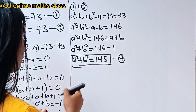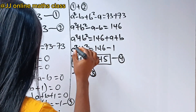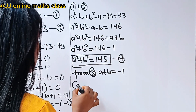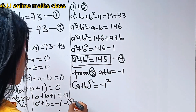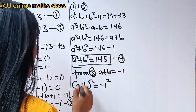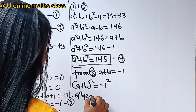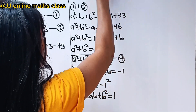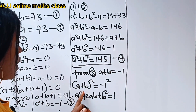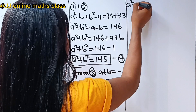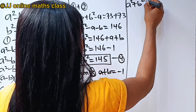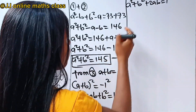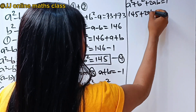From equation 3, a plus b equals minus 1. If we square both sides, we get a plus b squared equals minus 1 squared, which means a squared plus 2ab plus b squared equals 1, because minus 1 squared equals 1. We can bring out a squared plus b squared, so we have a squared plus b squared plus 2ab equals 1.